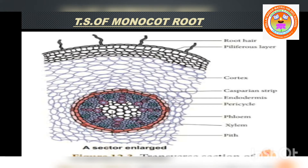First, epiblema or rhizodermis. It is the outermost layer of the root, made up of a single layer of thin-walled parenchymatous cells which are closely arranged without any intercellular spaces. In monocot root, the rhizodermis has no stomata and no cuticle — stomata and cuticle are absent. Root hairs are present.